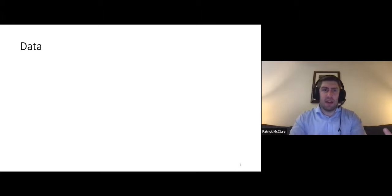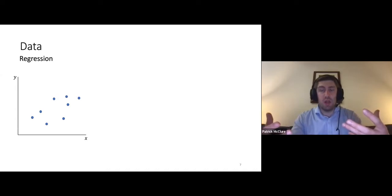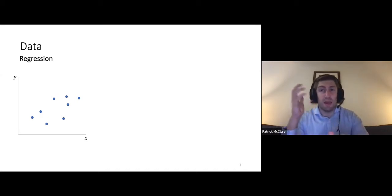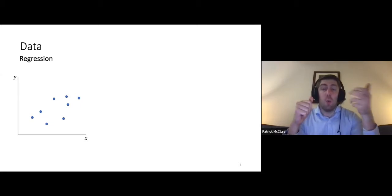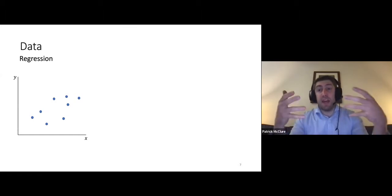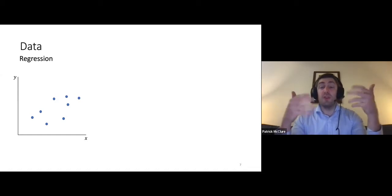We're going to go through these key components of machine learning by looking at a couple of linear models. First, we look at data. One very common type is data used for regression problems. In this case, we have one of the simplest examples, where the input is one-dimensional — just one real value, x — and the output y is also a real value. The goal is: given x, what real-valued number should y be?